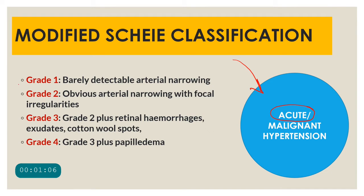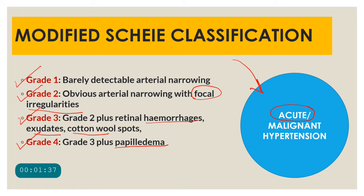Grade 1 hypertensive retinopathy means there is barely detectable arterial narrowing. Grade 2 means obvious arterial narrowing, particularly with focal irregularities. Grade 3 means, along with the signs seen in grade 2, there will also be retinal hemorrhages, cotton wool spots, and exudates. Grade 4 is grade 3 changes along with disc involvement, that is papilledema.